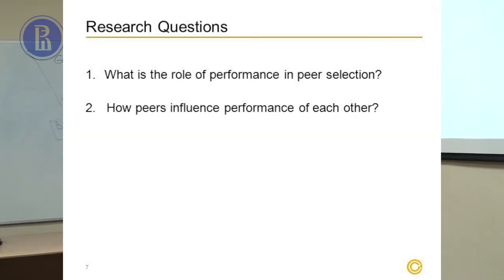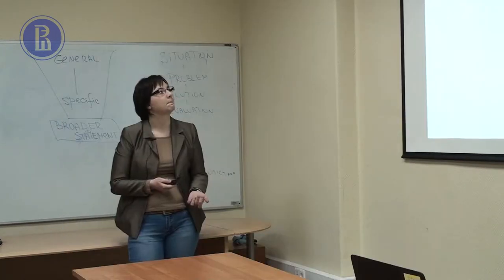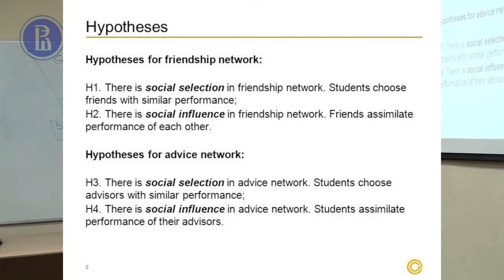We formulated the research questions as follows: what is the role of performance in peer selection? And how do peers influence the performance of each other? Based on these research questions, we formulated the following hypotheses. For the friendship network: first, there is social selection — students choose friends with similar performance; second, there is social influence — friends tend to assimilate the performance of their peers. The same hypotheses apply to the advice network.